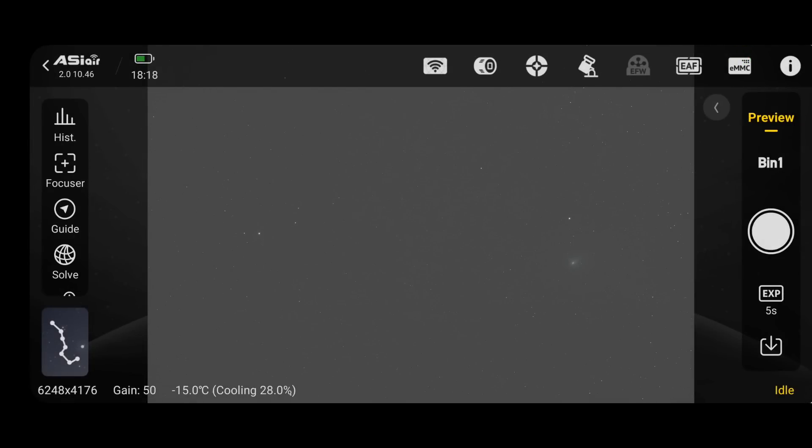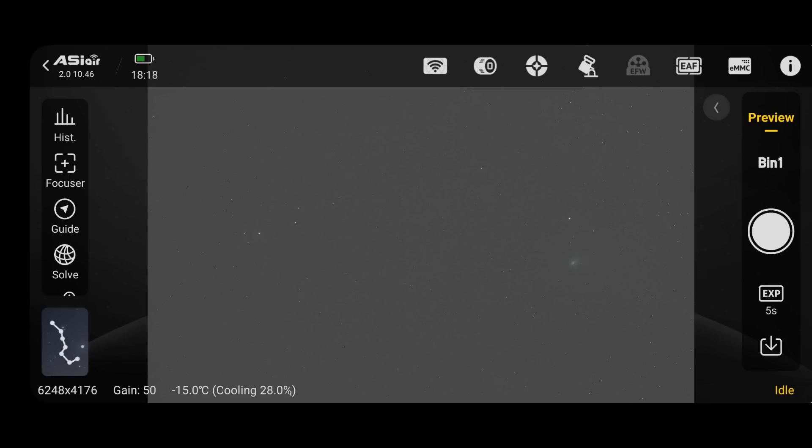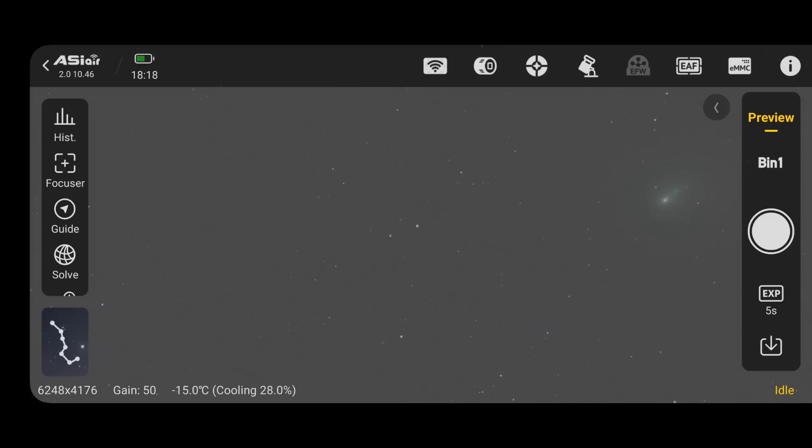So I've just slewed over to the coordinates. Four hours, 57, 39 seconds and 31 degrees, 21 minutes and 7 seconds. And we can see it's just there. Just there on the right of the frame. That's the comet.